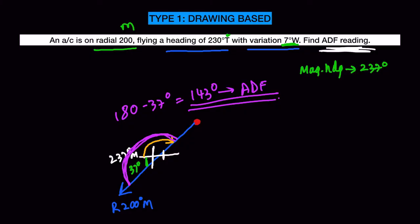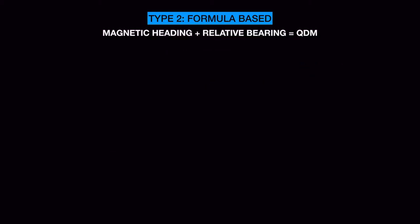Those were drawing-based questions. You can only answer these if you know how to draw what is given in the question — so read carefully and draw whatever you can. Only then will you be able to solve drawing-based numericals. The next type of questions are formula-based, using the formula: magnetic heading plus relative bearing equals QDM.